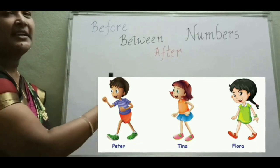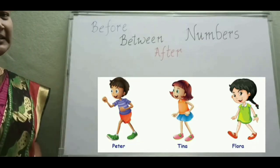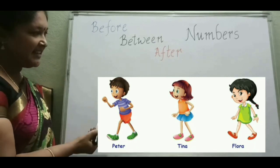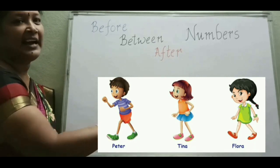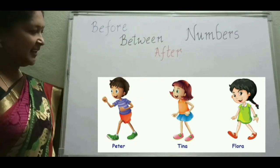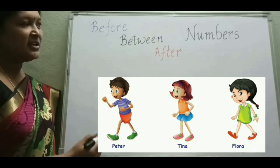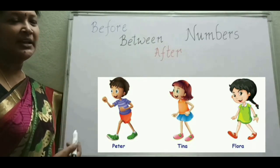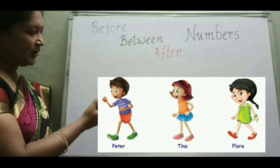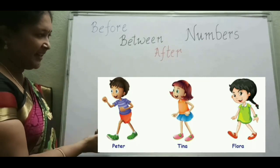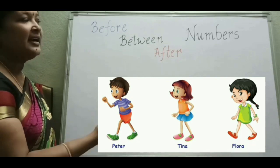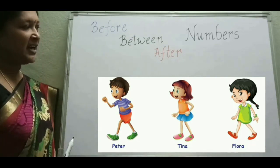See children, 3 students are there. What are their names? Peter, Tina and Flora. 3 friends are there in a class, and all 3 students are going in a line. What is the 1st child's name? Peter. 2nd child's name? Tina. And 3rd child's name? Flora.